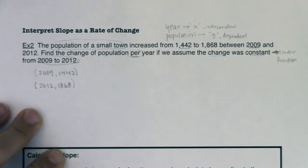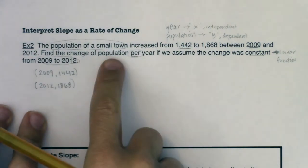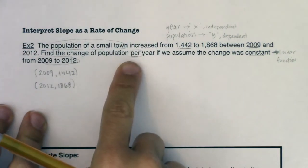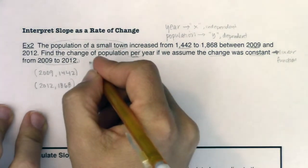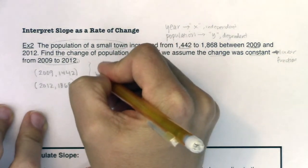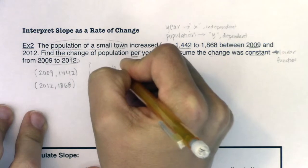I'm being asked to find the slope. I want the change in population per year if there's this constant rate of change. Well, let's go find the slope. We know the slope is always the change in y over the change in x.